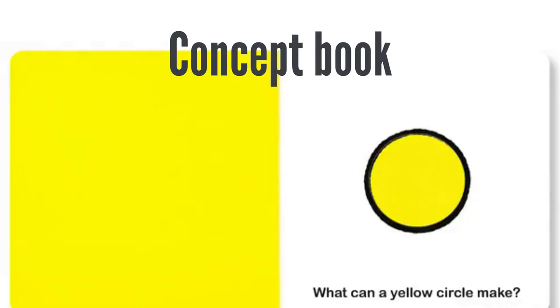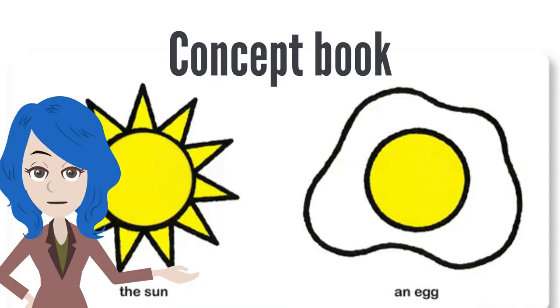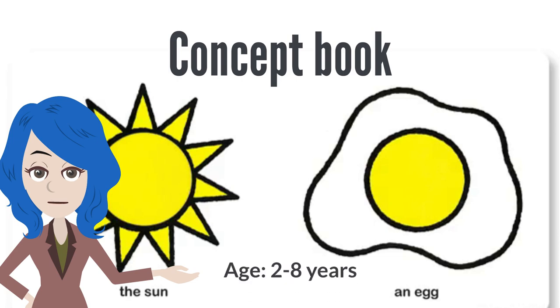Concept book: The concept book introduces children to a topic such as letters, counts, colors, or shapes. Age range: Two to eight years.